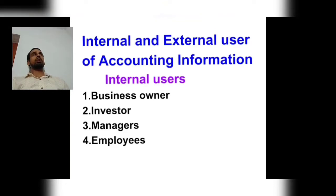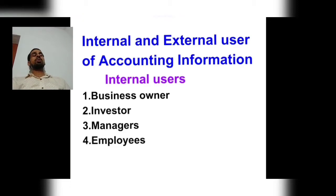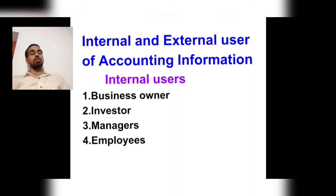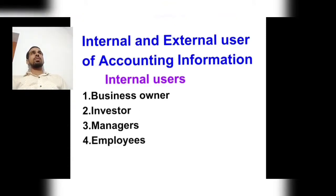Then we will talk about the third and fourth internal users of accounting information. The fourth internal users are employees. Employees are the pillar of any organization — if employees are not working well, our organization can't do anything or make progress. Every employee wants to know their future and what is going on in the organization, in the entity.